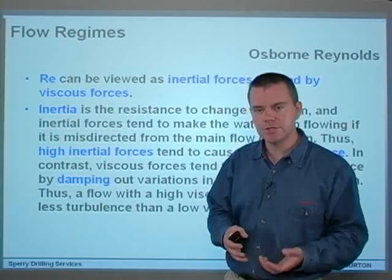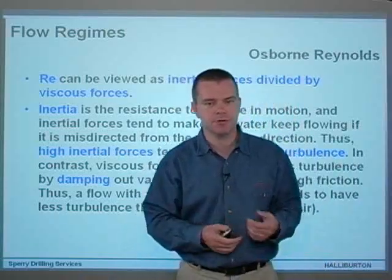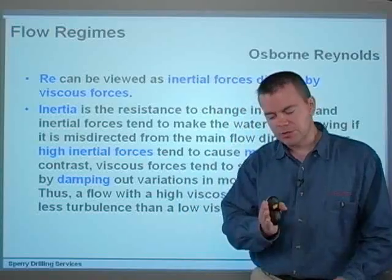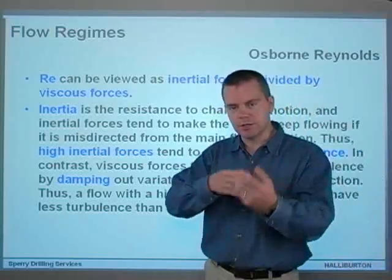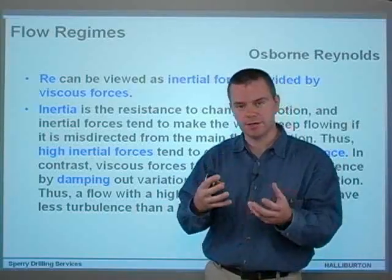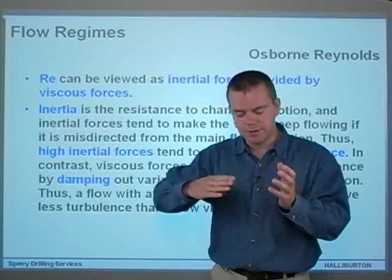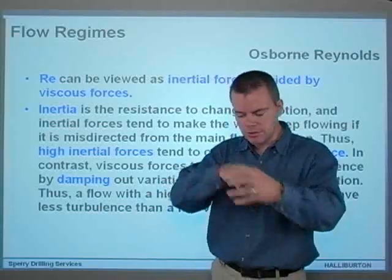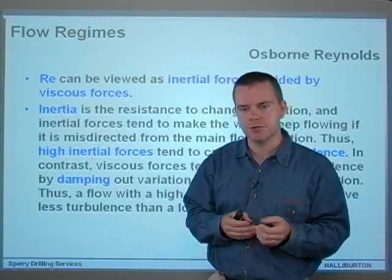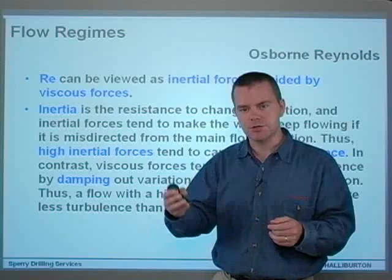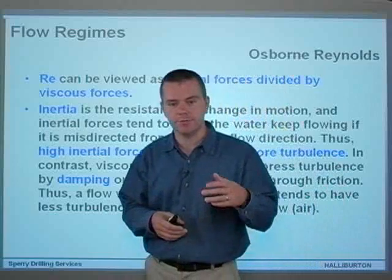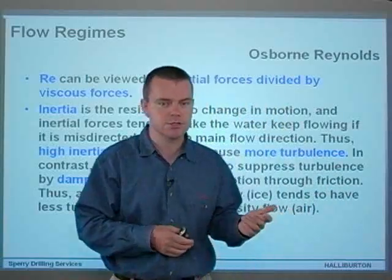In contrast, viscous forces tend to suppress turbulence by damping out variations in the motion through friction. So although the fluid may be trying to change direction and beginning to become turbulent because of its density, if it's very viscous — very thick — then it's not going to be able to become turbulent. This chaotic motion will be damped by the friction within the fluid, so it will not become turbulent so easily. A flow with a high viscosity like ice tends to have less turbulence than a low viscosity flow like air.